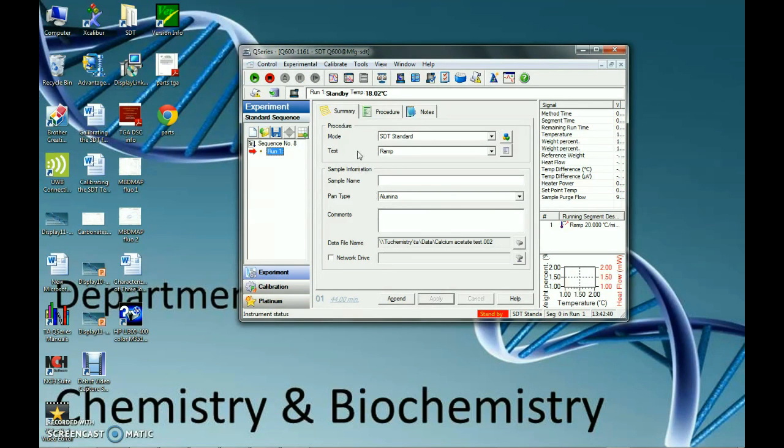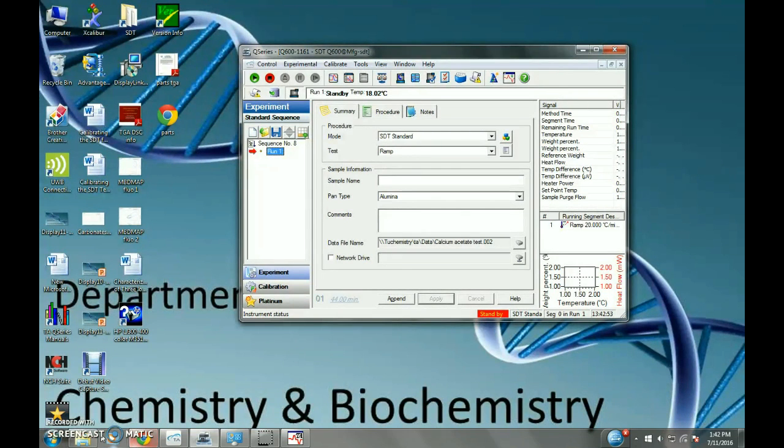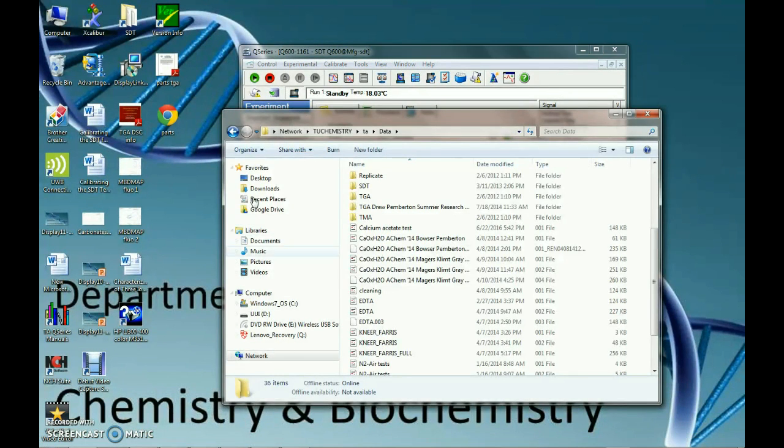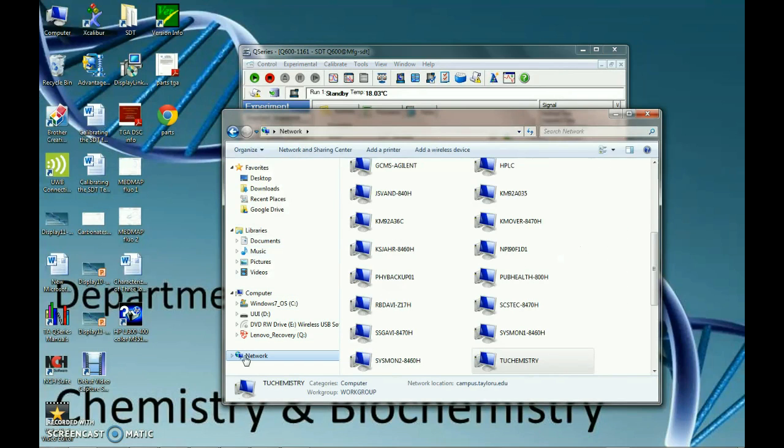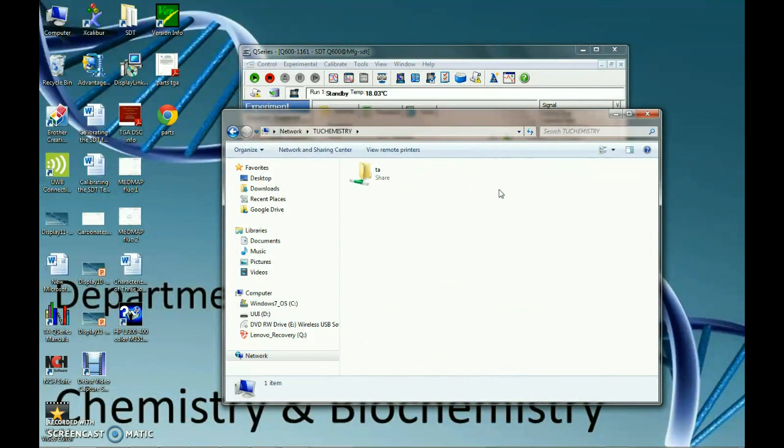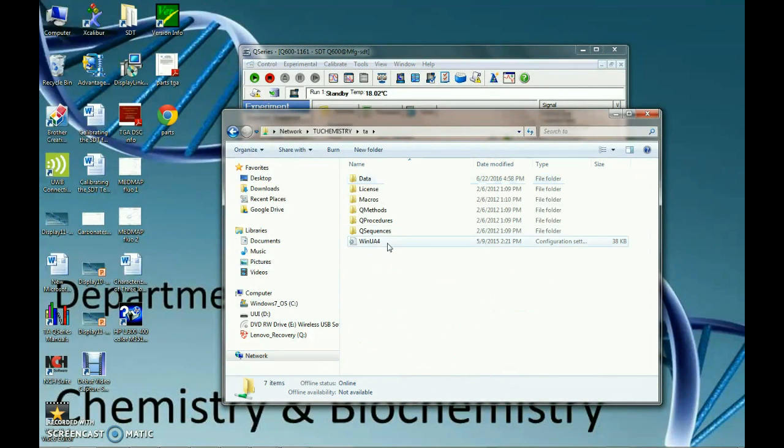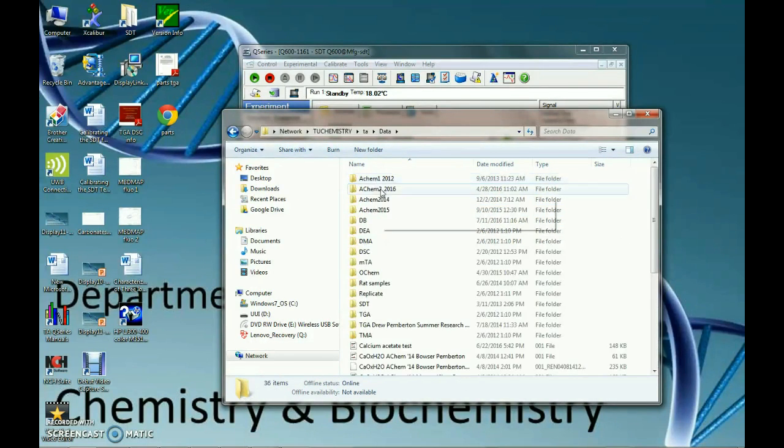So now that the run is finished, we can go ahead and look at our experiment data. Let's go ahead and open up the file folder here and go down to network, to chemistry, TA, and into data. So here's our experiment file, calcium acetate test.